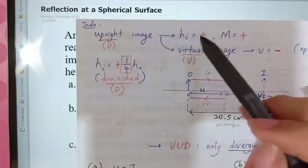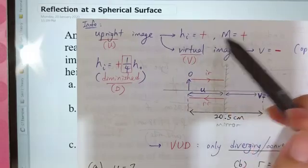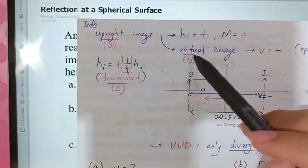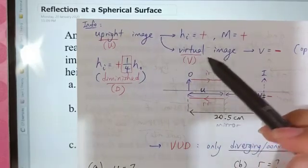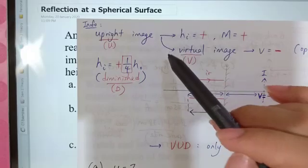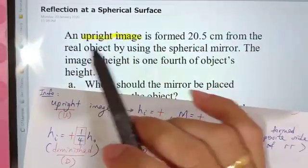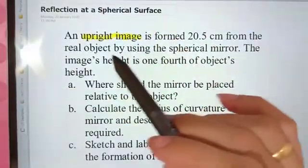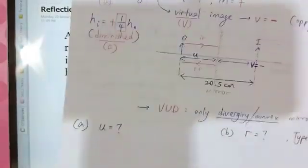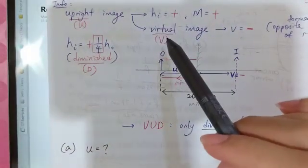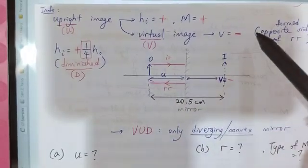An upright image means hi is positive. And we also know that when an upright image is always virtual — virtual always means upright, upright always means virtual. So the second thing we know is it must be a virtual image. Virtual image means V must also be negative.